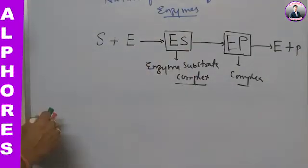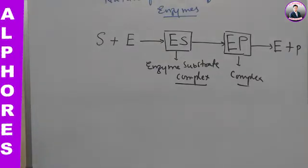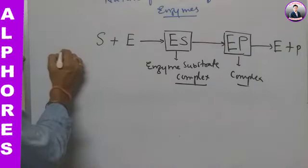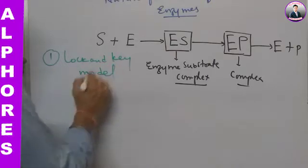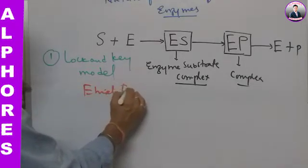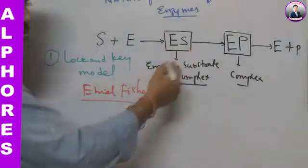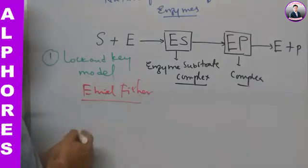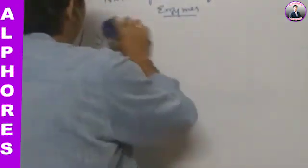This mechanism is explained by two theories. The first is called the Lock and Key Model, proposed by Emil Fischer. Emil Fischer proposed that the lock and key model explains the action of the enzyme — how it acts as a catalyst converting substrate molecules into products.